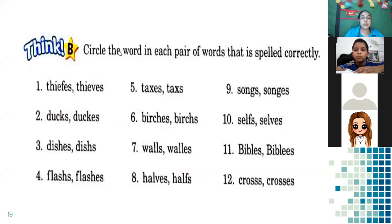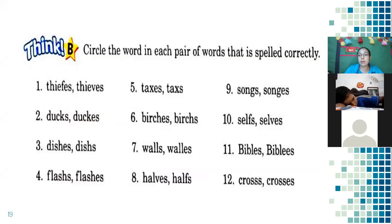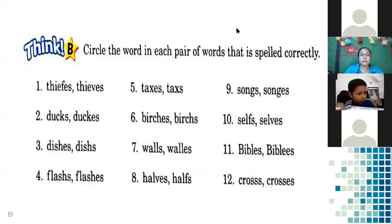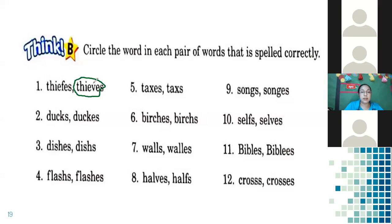In this exercise, we circle the word in each pair that is spelled correctly. Number one — thieves or theefes? Mario says thieves. Excellent — we circle thieves. Number two — ducks or dukes? Luisa Chinchilla — ducks. Excellent — we only add S at the end.